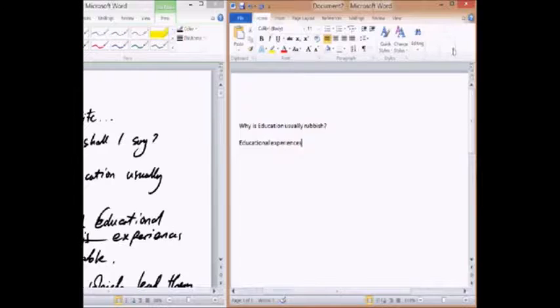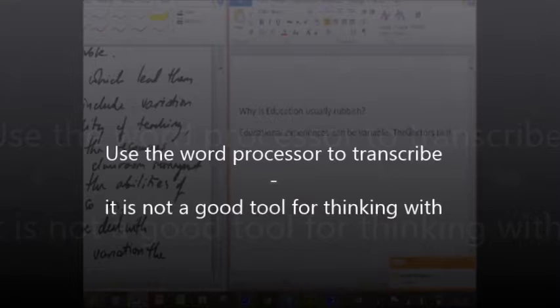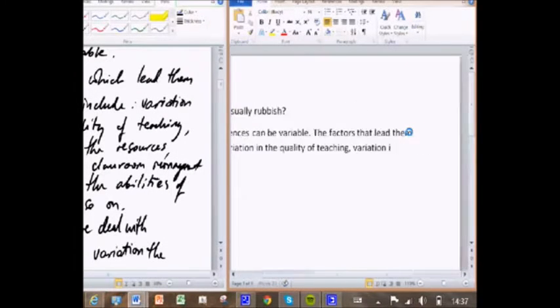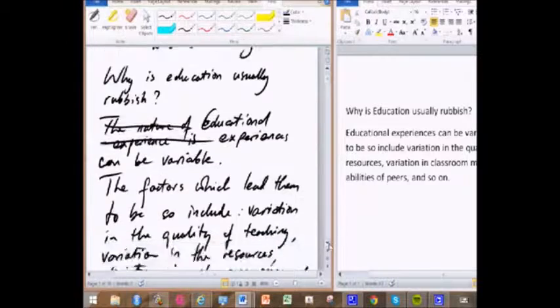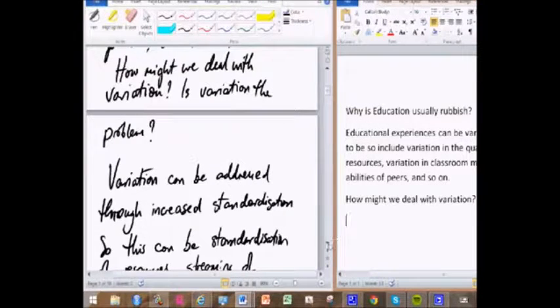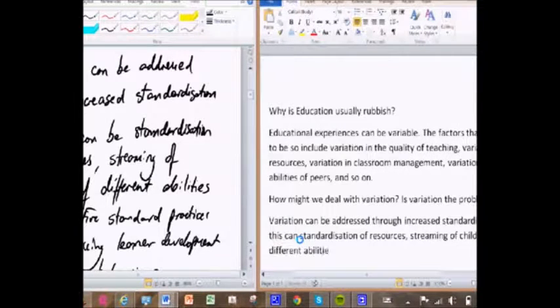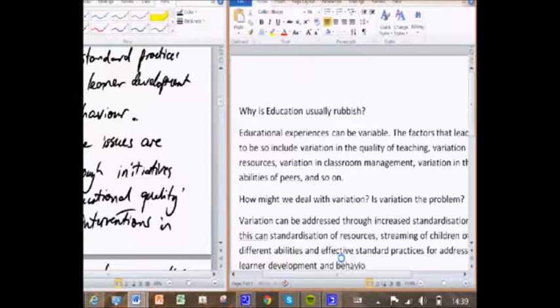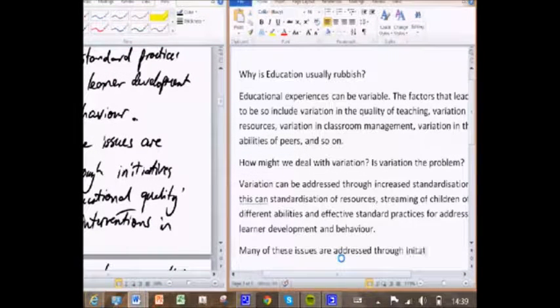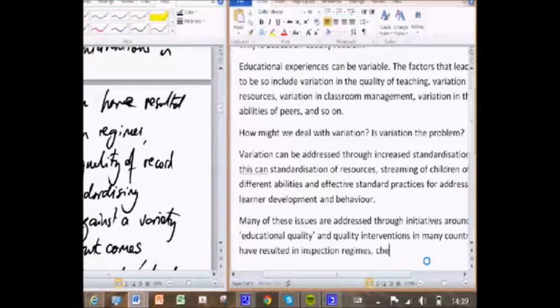Okay, so I've got that text and now I'm going to type it up. So this is me using the word processor literally to transcribe what is effectively a partially formed idea. So I'm going to type down, educational experiences can be variable. But the factors that lead it to be so include the quality in, variation in, what does that say? Variation in the quality of teaching, variation of resources, variation in the classroom. How might we deal with variation? Is variation the problem? Variation can be addressed for increased standardization, standardization of resources, streaming of children and so on. And many of these issues are addressed. I'm not thinking here as I'm doing this. I'm literally copying down what I've written on paper because I know that something of what I've written on paper will make a more polished paragraph.